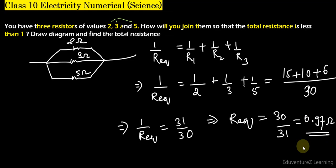So this is the value of equivalent resistance which is less than 1, and this is the diagram here. I hope that you have understood this question. Thank you very much for watching.